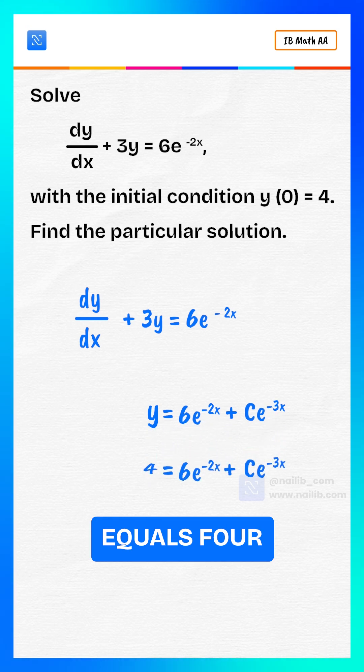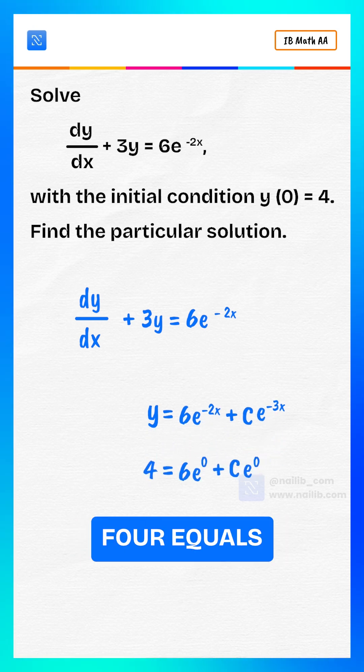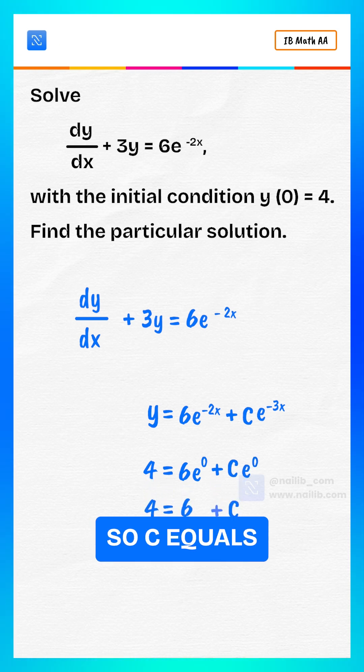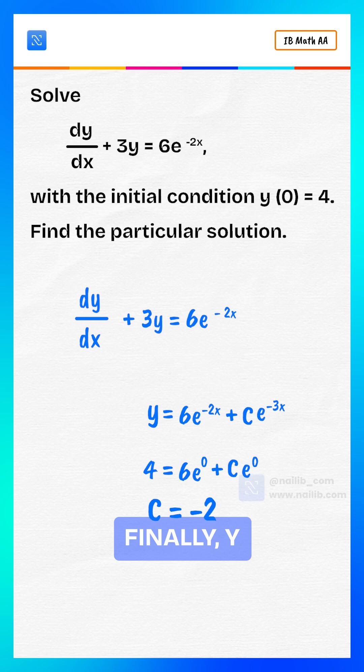Use y equals 4 when x equals 0. 4 equals 6e to the power 0 plus ce to the power 0. 4 equals 6 plus c, so c equals negative 2.